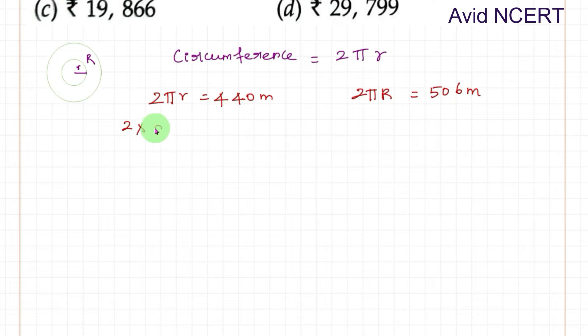2 times 22 by 7, pi is 22 by 7, times r equals 440 meters. To find r, take the remaining values to the other side and it becomes inverse. So 2 by 1 becomes 1 by 2 times 22 by 7 becomes 7 by 22. Simplifying this, we get 70 meters. That is the radius of the inner circle.